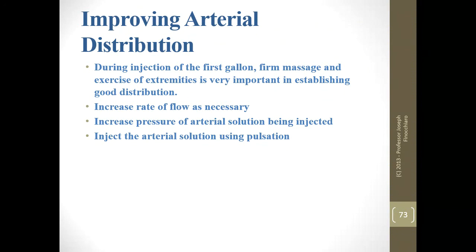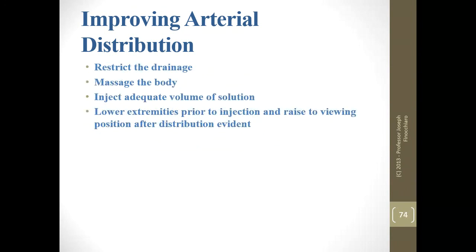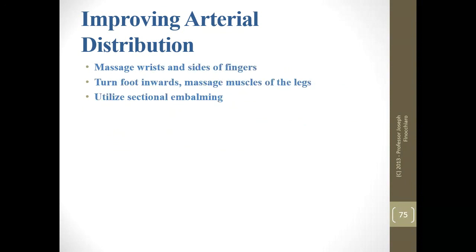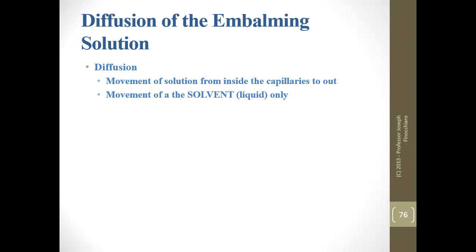Observations to improve distribution include massage, dropping the hands over the side of the table to assist the upper extremities, increasing pressure, and using pulsation. Pulsation has become the preferred technique, replacing direct injection, which was the old-school method. Restrict drainage, massage the body — use all the tools we have been discussing.